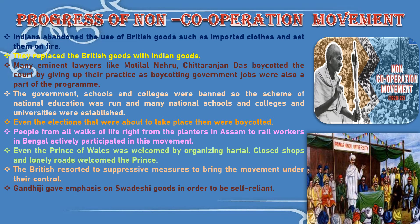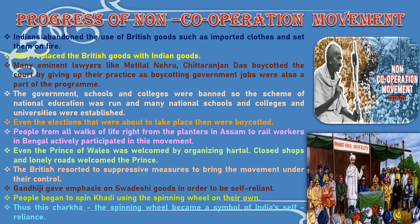When Indians boycotted British clothes, Gandhiji gave emphasis on Swadeshi goods to make India self-reliant. People began to spin khadi using the spinning wheel on their own. Thus, the Charkha — the spinning wheel — became a symbol of India's self-reliance. In the present times, the initiative Make in India undertaken by Prime Minister Narendra Modi also points towards the importance of making India self-reliant and self-sufficient, helping India emerge as a powerful country.